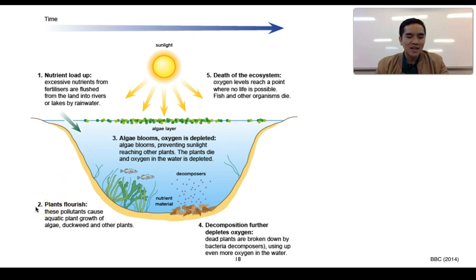So the second step: plants end up flourishing, which may seem initially quite good. However, this provides the right environment for algae to flourish and grow. Algae typically forms a layer on top of bodies of water, resulting in the so-called algal blooms.